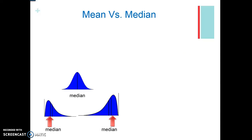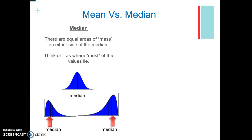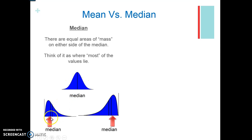Now let's discuss where the mean and median lie in relation to a density curve. We're taking our histograms and making a nice curve over them to create a bell curve. With the median, there are equal areas of mass on either side. For a symmetric curve, the median is in the middle with equal amounts on either side. For a right-skewed curve, the median is towards the left because there are equal amounts of data on each side. Same concept applies to a left-skewed curve.